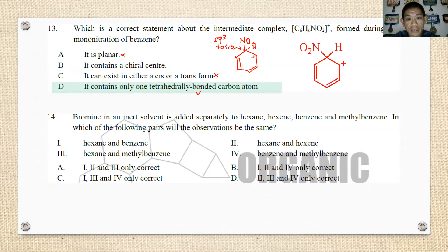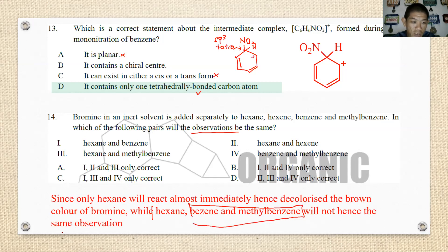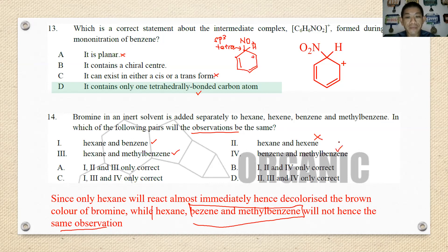Number fourteen: bromine in an inert solvent is added separately to hexane, hex-1-yne, and benzene — in which pair will the observation be the same? Bromine can only react with the alkyne. So hexane, benzene, and methylbenzene will have the same observation — no decolorization. Hexane and benzene: same. Hexane and methylbenzene: same. Hexane and hex-1-yne: different. Benzene and methylbenzene: same. So the answer is 1, 3, and 4 — best answer is C.